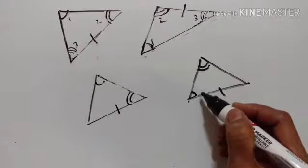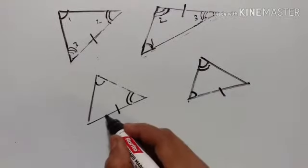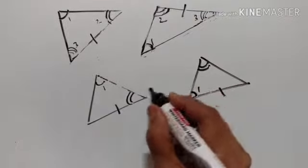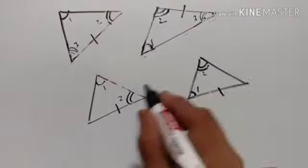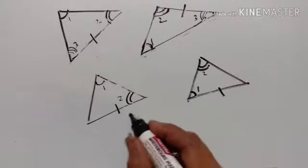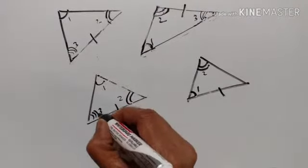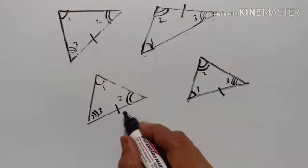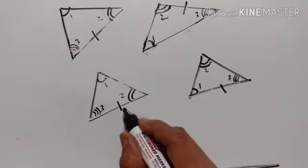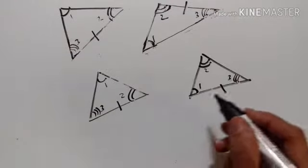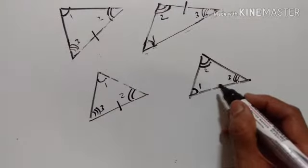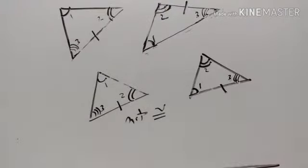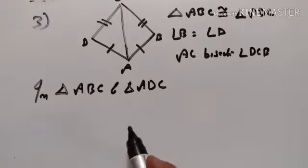Here, two angles of this triangle are congruent to two angles of the other triangle — let us name them 1, 1 and 2, 2 — because this angle is equal to this angle and this angle is equal to this angle, so the third angle of this triangle is equal to the third angle of the other triangle. However, this side is between angle 2 and angle 3, while the corresponding side is between angle 1 and angle 3. Therefore these two triangles are not congruent.